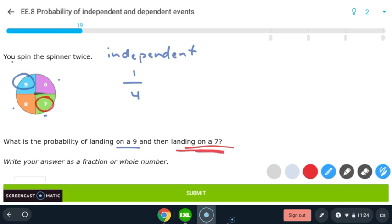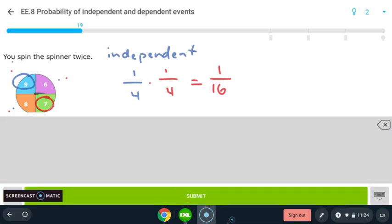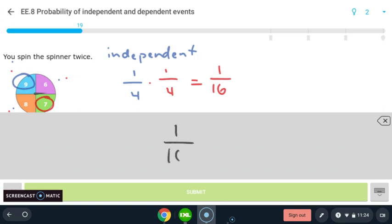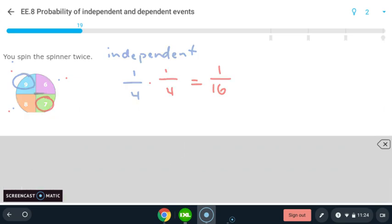And then we'll move on to the probability of landing on a seven. Again, the seven, there's one spot out of four total spots it could land on. So we've got one fourth times one fourth, and you get one sixteenth. And again, they asked us to write it as a fraction or a whole number. So we'll go ahead write in that answer. And there we go.